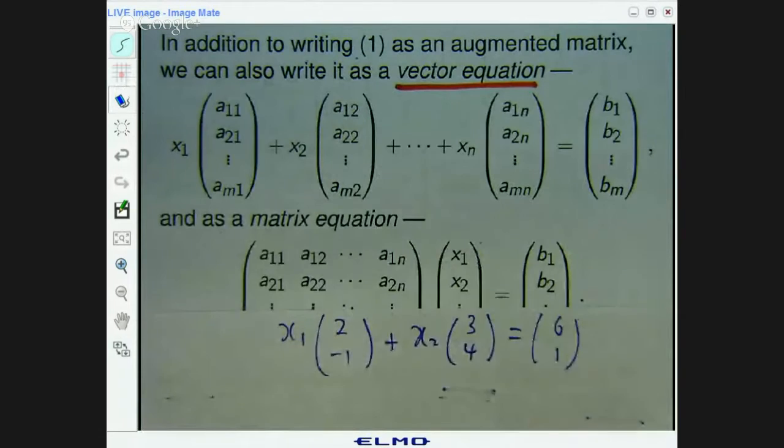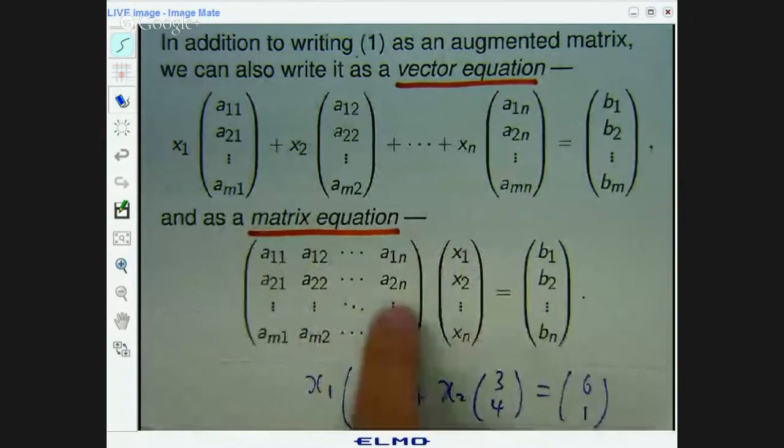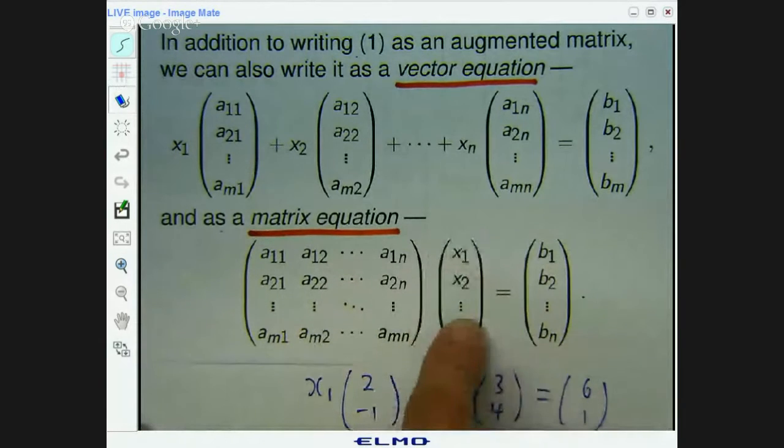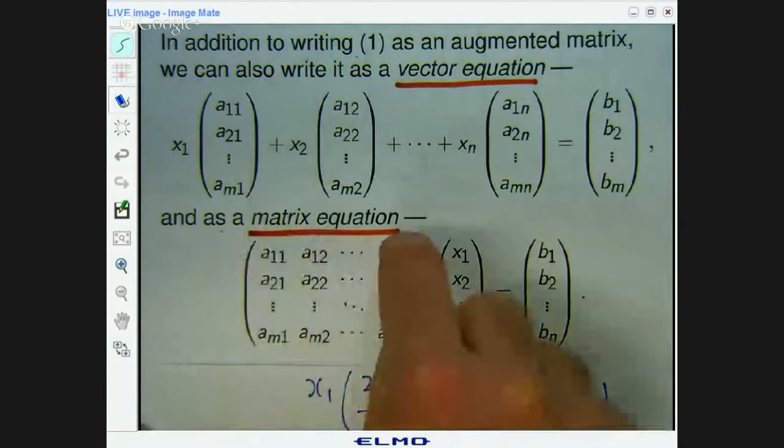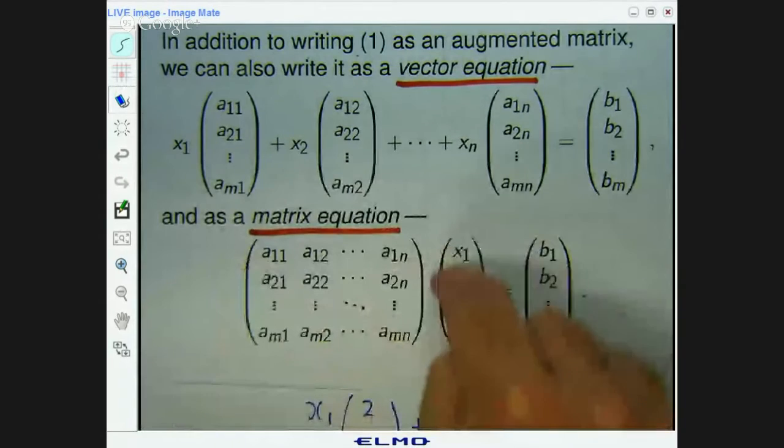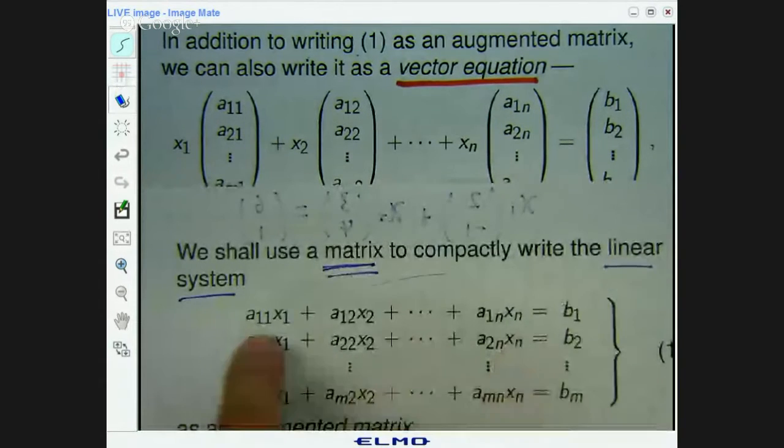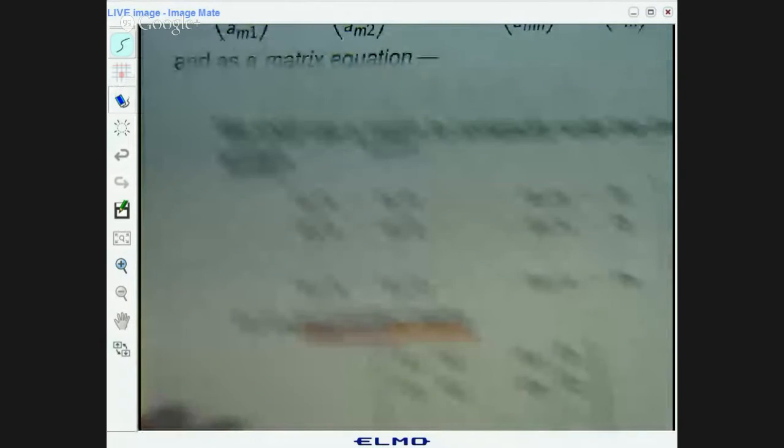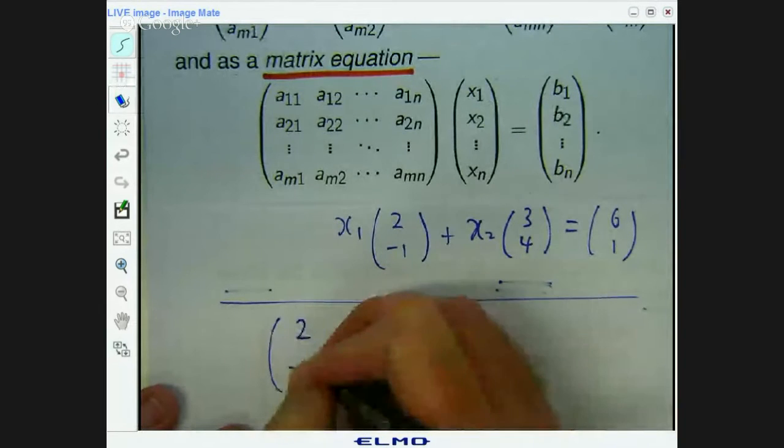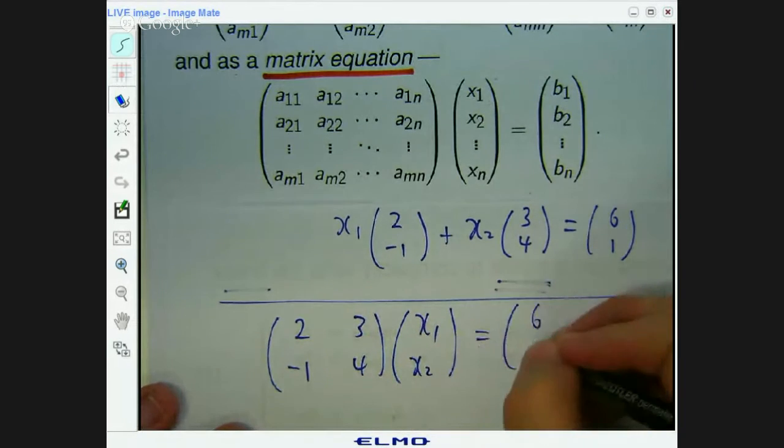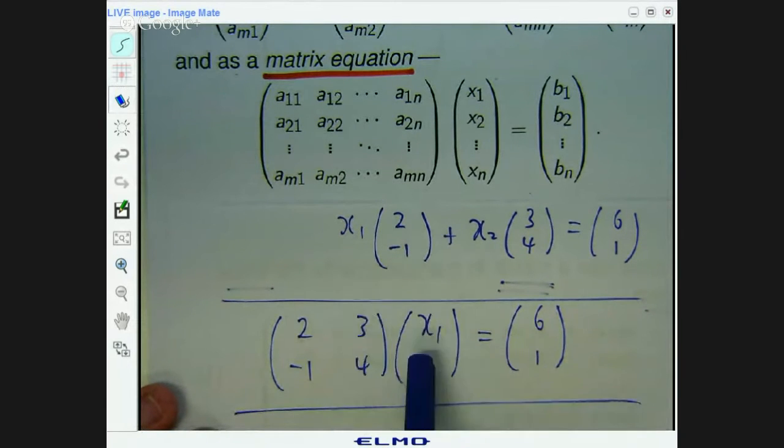All right. So for that linear system there, I can write it as this vector equation. And you can also write the system as a matrix equation. Okay? So basically here, you've pretty much separated your augmented matrix now and you've written the unknowns as a vector. And it's understood that if you multiply this row with this column, you get this left-hand side and it's equal to the first entry. If you multiply this row with this column, you get this second left-hand side and it's equal to b2, et cetera. Okay? So for our example that we're working with, the matrix form or the matrix equation form would be the following. Okay? So 2 times x1 plus 3 times x2 equals 6. Negative 1 times x1 plus 4 times x2 equals 1.